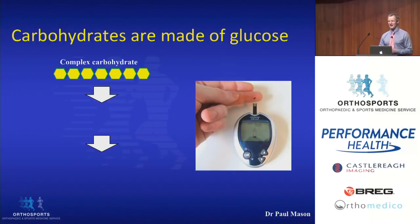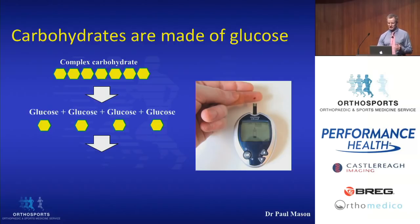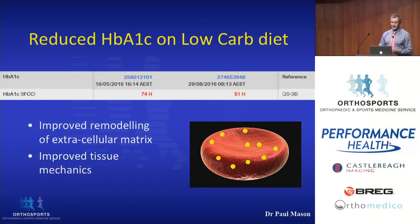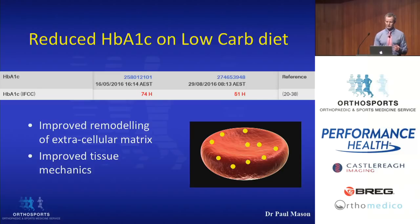Understanding how dietary carbohydrate relates to this is critical to understanding why low-carbohydrate diets can be so beneficial. Most people don't realise that complex carbohydrates are just chains of glucose molecules, and when you eat a complex carbohydrate, those glucose molecules simply end up in the bloodstream. Therefore, if the problem is elevated blood sugar levels, cutting out or eliminating carbohydrates from the diet as much as is practicable can lead to significant benefits. This blood test — the HbA1c — shows an example of a patient before and after being placed on a low-carbohydrate diet, with a reduction from 74 down to 51, which has the potential to lead to improved remodeling of the extracellular matrix and overall improved mechanics of the tissue.